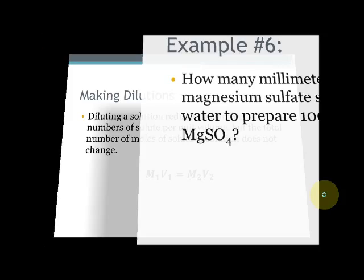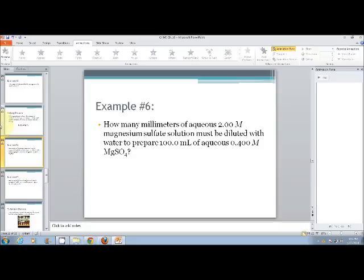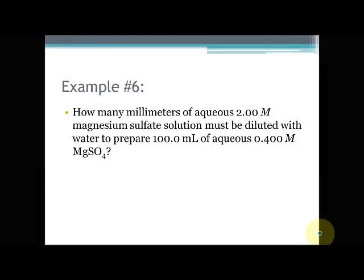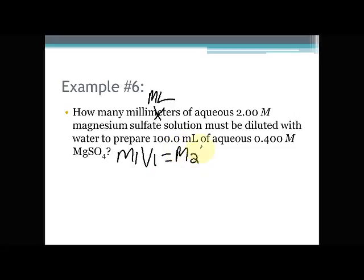Next slide. Hey, no Snapchatting in my class. Example 6: How many milliliters of aqueous 2.00 M magnesium sulfate solution must be diluted with water to prepare 100.0 mL of aqueous 0.400 M MgSO₄? So our equation is M₁V₁ = M₂V₂.